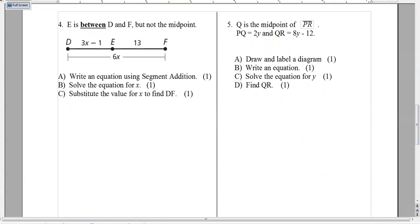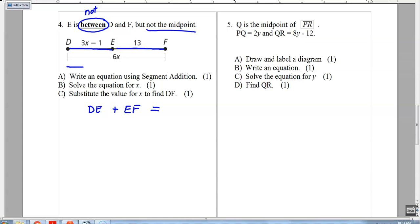Alright, let's move to the back side. Number 4. Very important question here. E is between. Okay. Between means, well, it's right here. Not the midpoint necessarily. So when you're doing this, if it's not in the middle, the only thing you know is that the left-hand side, DE, added to the right-hand side, EF, has to be equal to the entire segment, which is DF. And if I put the values in, the value for DE is 3X minus 1. The value for EF is 13. And the grand total is 6X. And now we have an algebra equation on our hands.